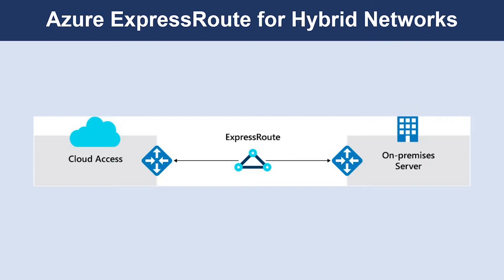A connectivity provider helps make this connection. ExpressRoute extends beyond Azure and lets you establish connections to other Microsoft cloud services, such as Office 365. ExpressRoute connections don't use the public internet. By using a dedicated connection between your on-premises network and Azure, you achieve greater resilience, faster speeds, higher security, and lower latency.